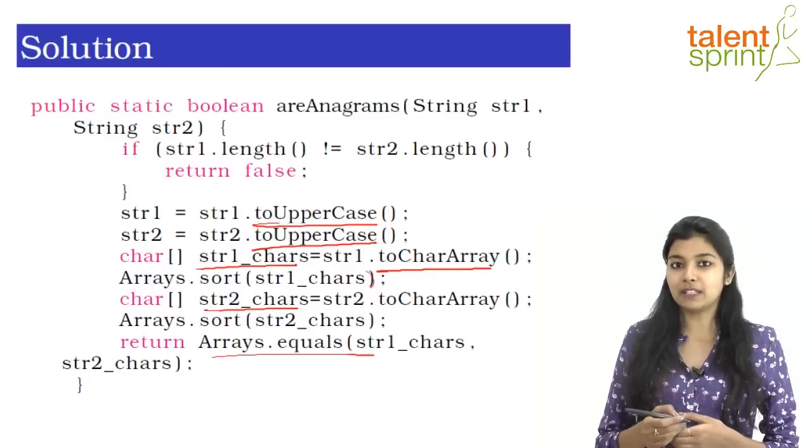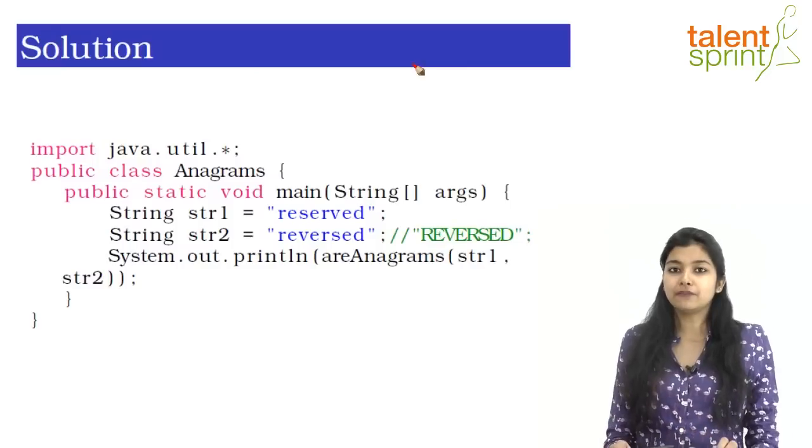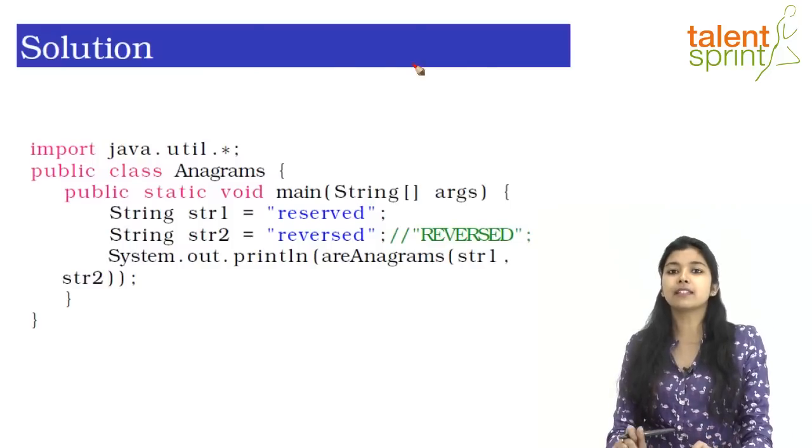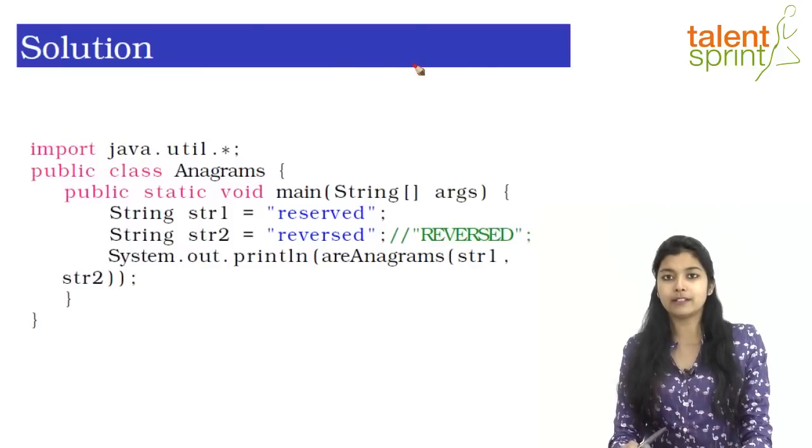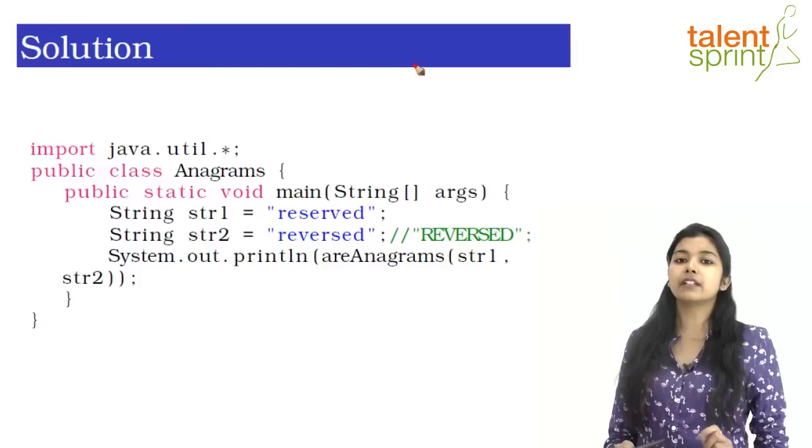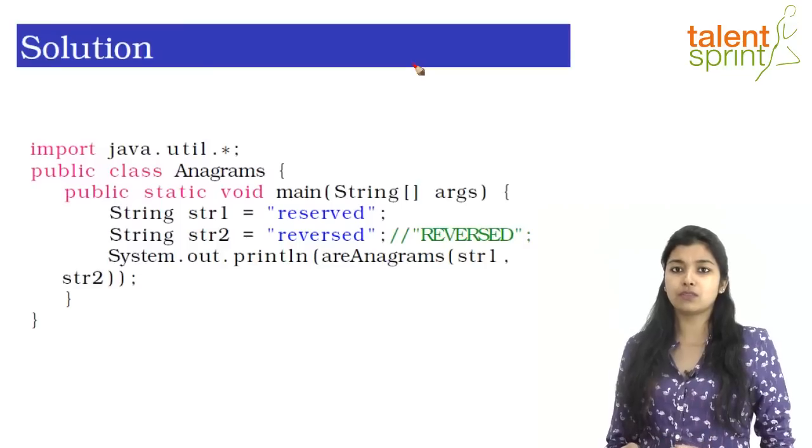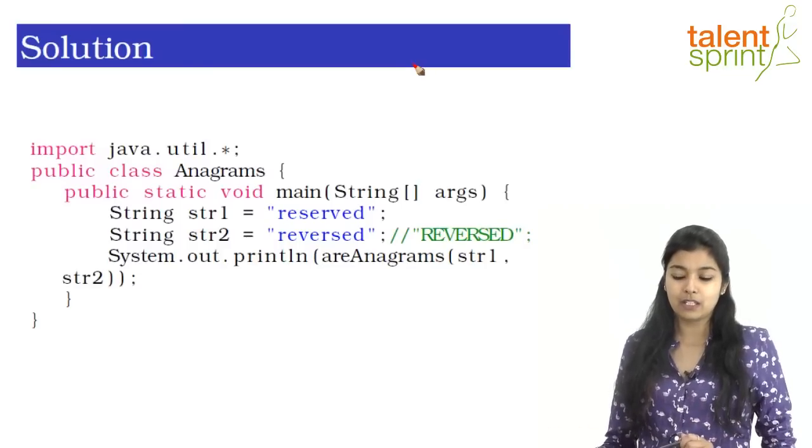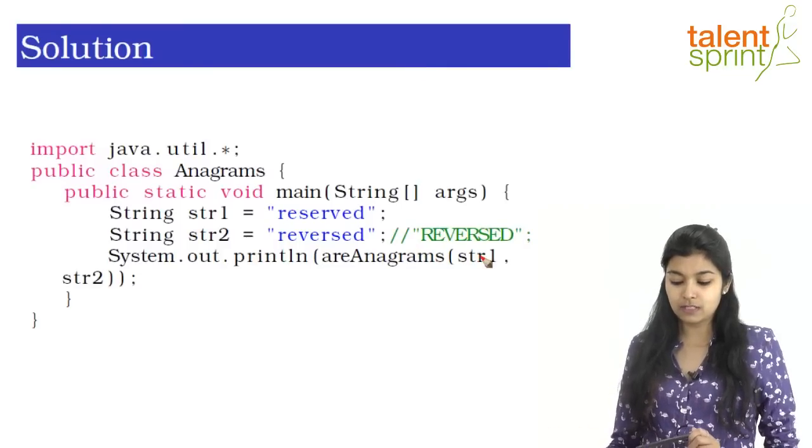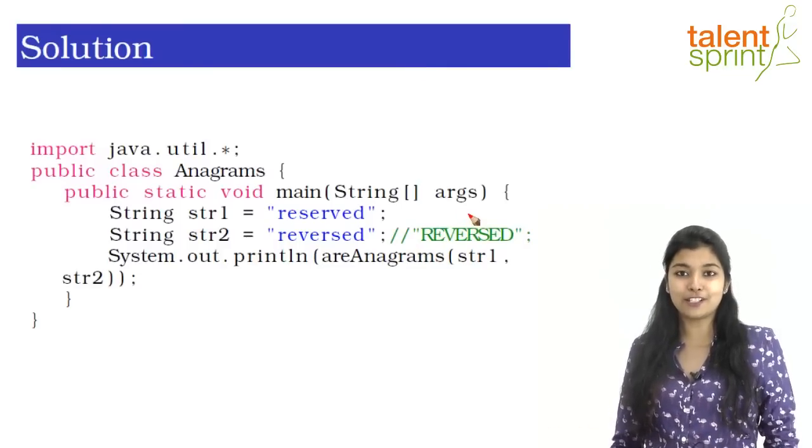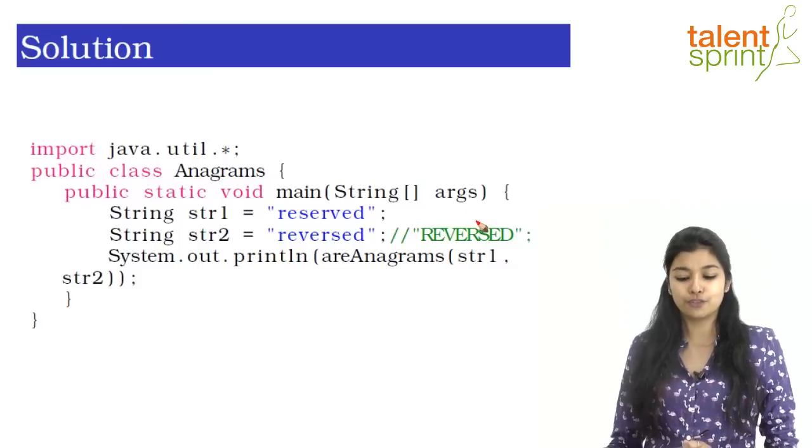Let's see the call in the main. So as you can see in the main function, we have created two strings str1 and str2 and assigned the values reserved and reverse to both of them and we are simply passing these strings to our function areAnagrams. And as you can see and judge by yourself already, the output would be true for this program.